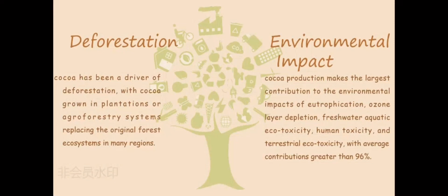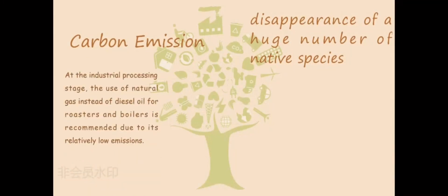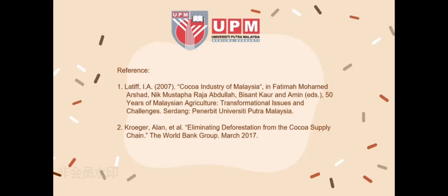Cocoa production makes the largest contribution to environmental impacts including eutrophication, ozone layer depletion, freshwater aquatic ecotoxicity, human toxicity, and terrestrial ecotoxicity, with average contributions greater than 96%. At the industrial processing stage, the use of natural gas instead of diesel oil for roasters and boilers is recommended due to its relatively low emissions. The conversion of semi-deciduous forests to cocoa plantations resulted in plant diversity and species richness loss due to the disappearance of many native species. While earthworm abundance and species richness increased due to species adapted to degraded lands. That is all about cocoa's production process — if you want to know more, please subscribe to us.